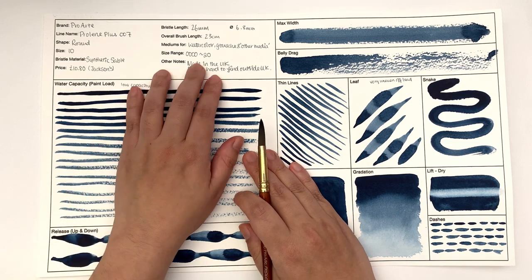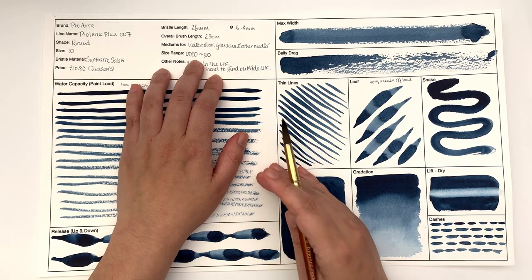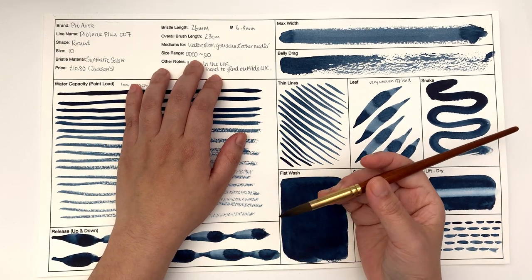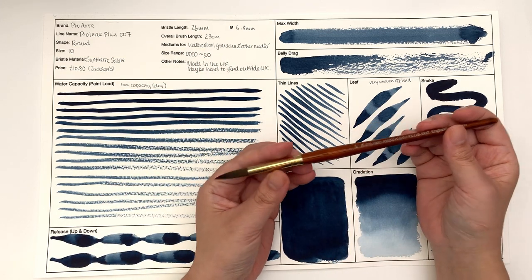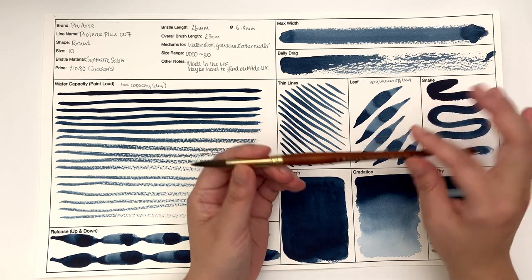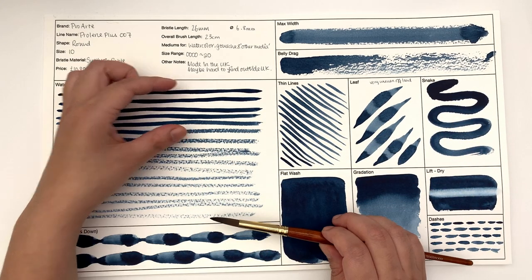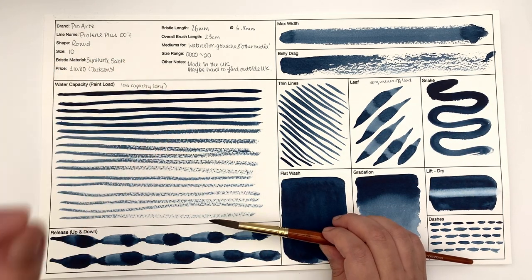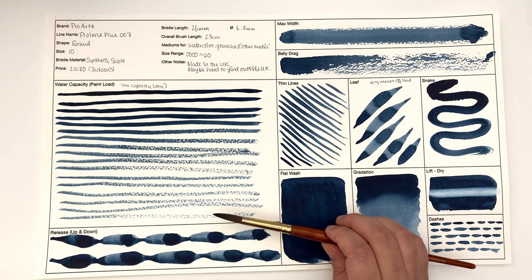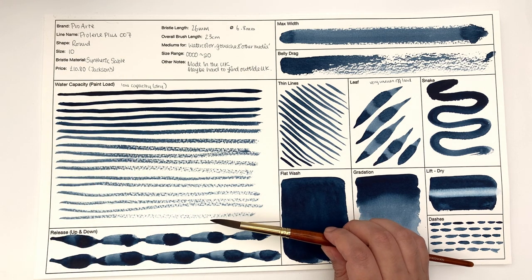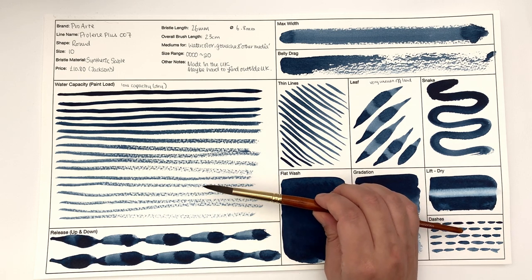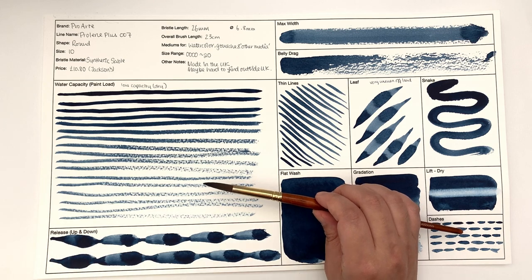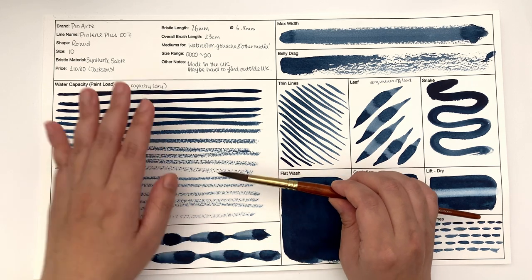It is available from 000, which I guess is the same as 4 over 0, to size 20. So you can get pretty big brushes as well. In terms of water capacity, it holds a bit more water than the Princeton Heritage, but it's not a really thirsty, soaked-in paint kind of brush, which is great for me.